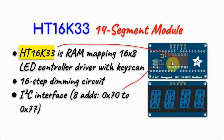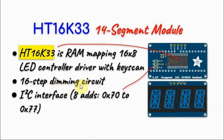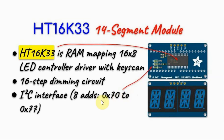The HT16K33 is similar to the MAC719 IC, which is an LED driver and key scanner. It has onboard 16 bytes of RAM used to map different patterns on the 14-segment display. The driver has a dimming circuit allowing 16 brightness levels. The IC interfaces to a microcontroller using I2C, and we can connect up to eight devices. The default address is 0x70, changeable by hardwiring address lines A0, A1, and A2.